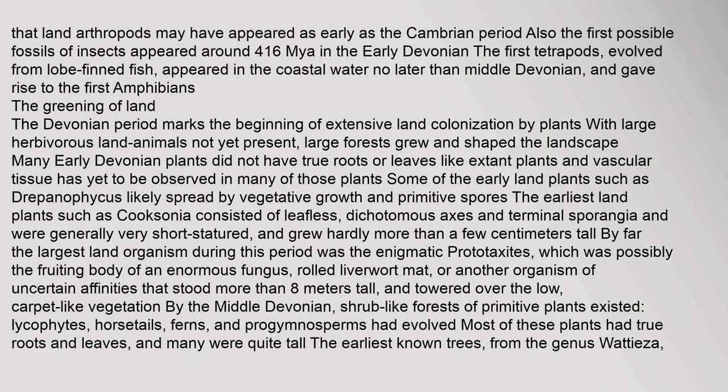Land arthropods may have appeared as early as the Cambrian period. Also, the first possible fossils of insects appeared around 416 Maya in the early Devonian. The first tetrapods, evolved from lobe-finned fish, appeared in the coastal water no later than the Middle Devonian, and gave rise to the first amphibians. The Devonian period marks the beginning of extensive land colonization by plants, with large herbivorous land animals not yet present. Large forests grew and shaped the landscape. Many early Devonian plants did not have true roots or leaves like extant plants, and some of the early land plants such as Drepanophicus likely spread by vegetative growth and primitive spores.